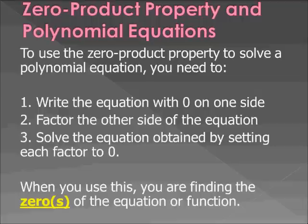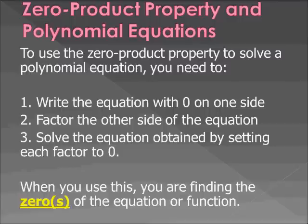To use the zero product property to solve a polynomial equation: step one, write the equation with 0 on one side — move everything to one side. Step two, factor the other side of the equation completely. If you can't factor, you'll have to use the quadratic formula, which we'll do later. Step three, solve the equation obtained by setting each factor to 0. That's when you use the zero product property, because if a times b equals 0, one or both — or in some cases three or four factors — any one of those has to equal 0. When you use this, you're finding the zeros of the equation or function.